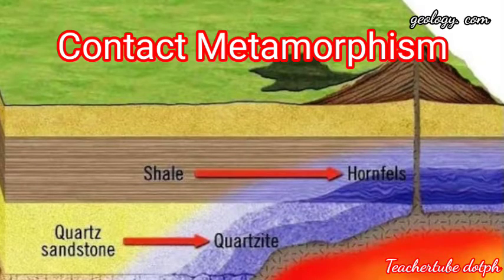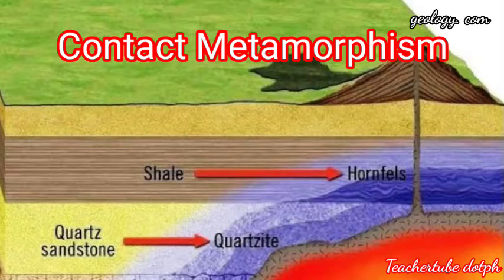Contact metamorphism. The word comes from contact — when you say contact, there is a touching of one object to another. Here, rock changes because of contact with heat. The heat we are talking about is the heat from magma, the molten rock material inside the earth.